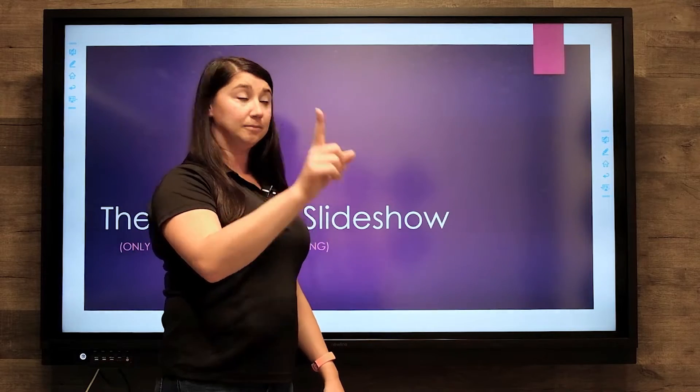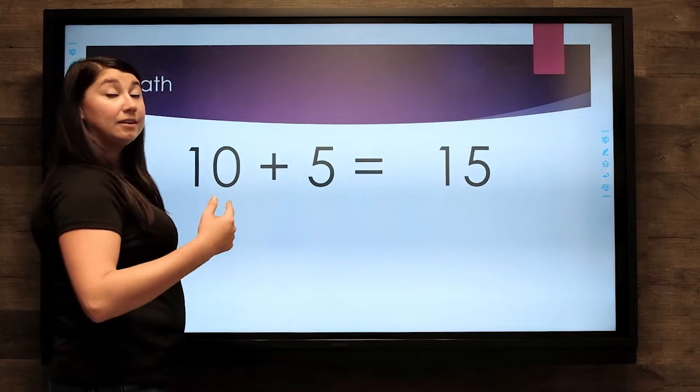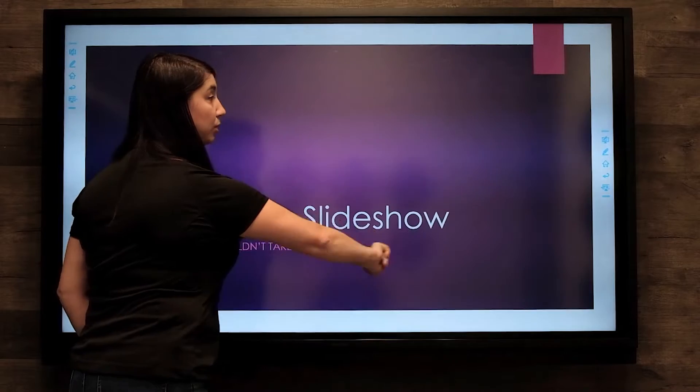If I take my finger and swipe from right to left, it will advance my slides. If I go the opposite direction from left to right, it will go backwards.